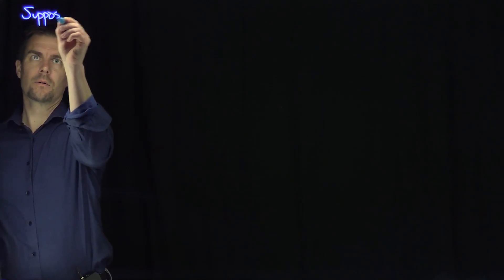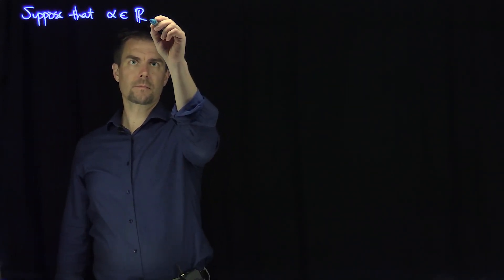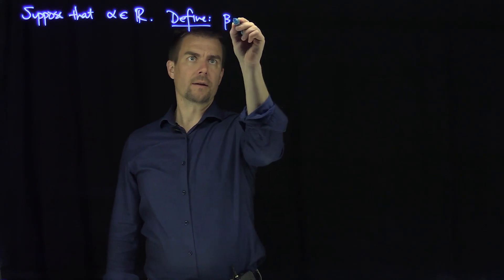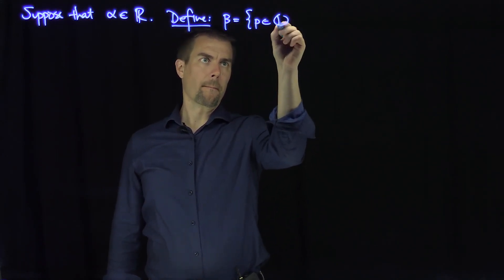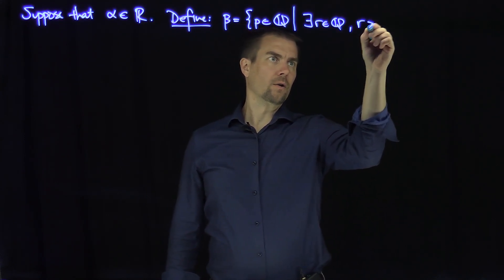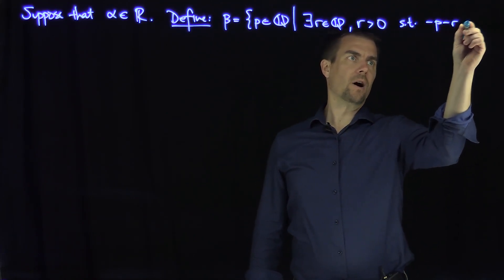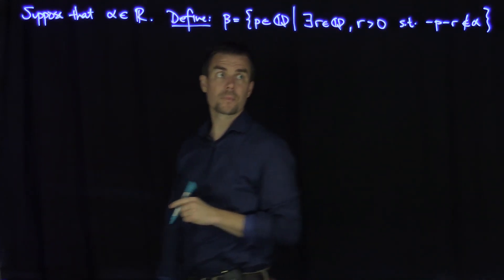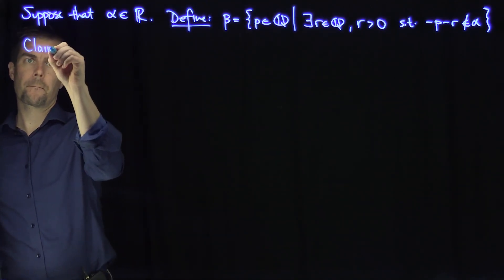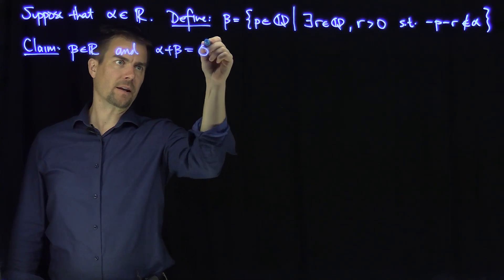Let's suppose that alpha is a real number, and we're going to define a number beta. Beta is the set of all p in Q such that there exists r in Q, r greater than 0, such that negative p minus r is not in the Dedekind cut alpha. Our claim is that this beta is a real number and that alpha plus beta is the Dedekind cut 0-star.